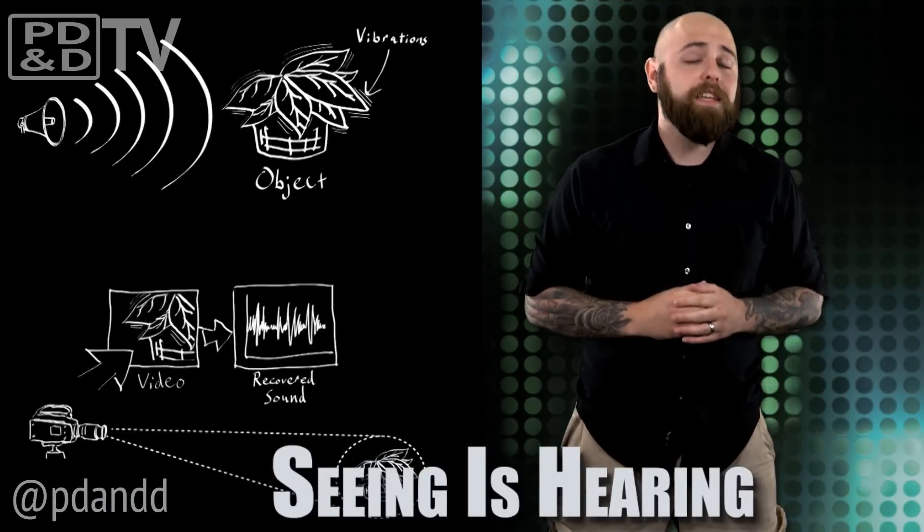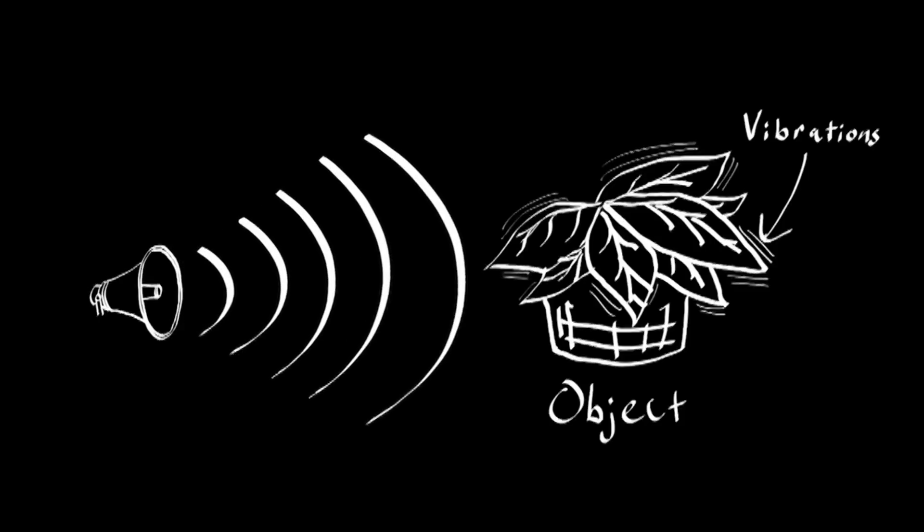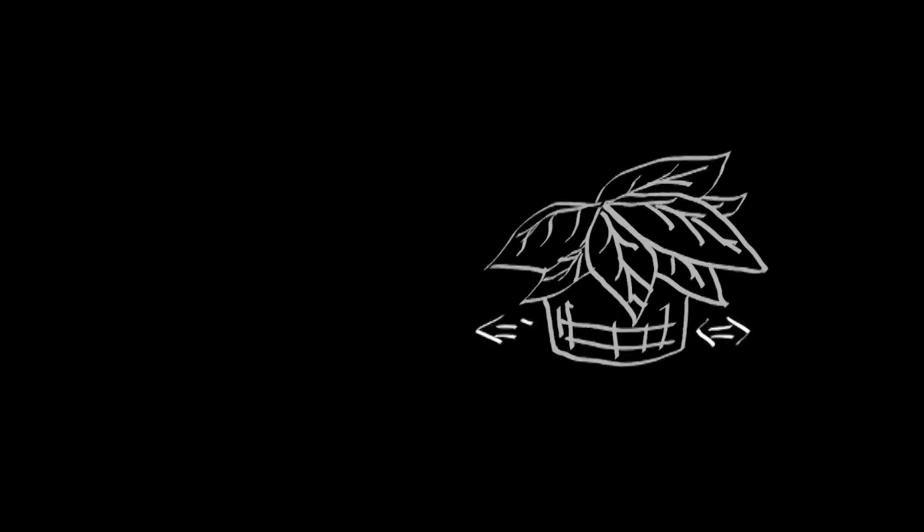Researchers at MIT, Microsoft, and Adobe have created an algorithm that can analyze tiny vibrations of objects in a video and translate the vibrations into an audio signal. The technique passes successive frames of video through a battery of image filters.